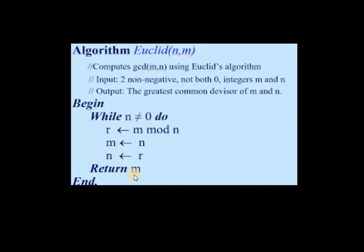Let me explain this algorithm once again slowly. The name of the algorithm is Euclid, it takes two numbers M and N. This algorithm calculates GCD of two numbers M and N using Euclid's algorithm. It works for two non-negative integers M and N — both should not be zero, but if any one of them is zero it still works. The output will be GCD of given two numbers M and N.